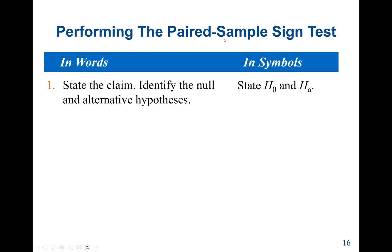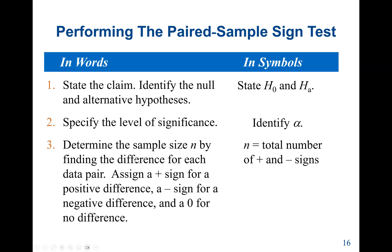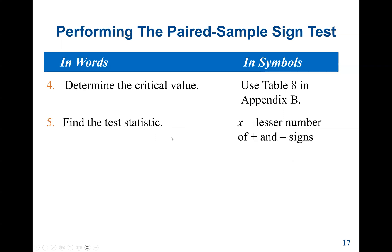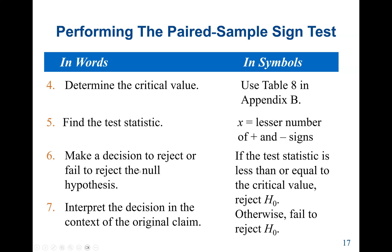To perform a paired sample sign test: state the claim, identify H0 and HA. Specify the level of significance (alpha). Determine the sample size N by finding the difference for each data pair — assign a positive sign for positive differences, a negative sign for negative differences, and zero for no difference. Then determine the critical value and find the test statistic. Make a decision: if the test statistic is less than or equal to the critical value, reject H0; otherwise, fail to reject H0. Finally, interpret the results.